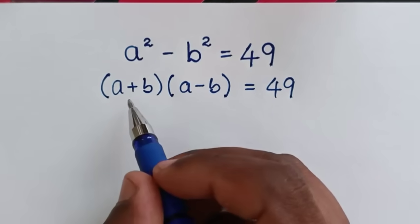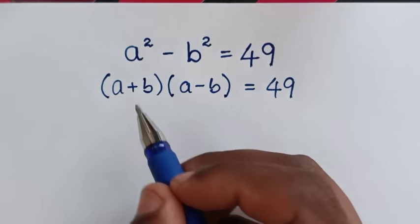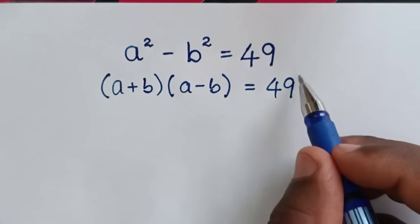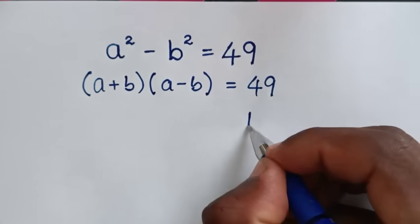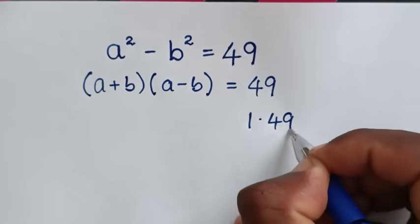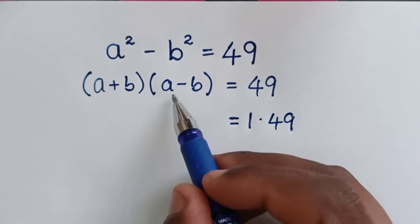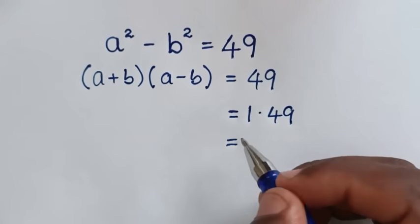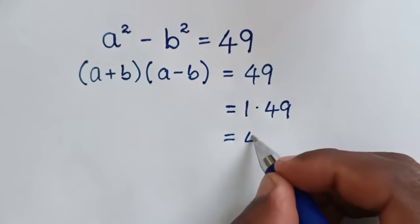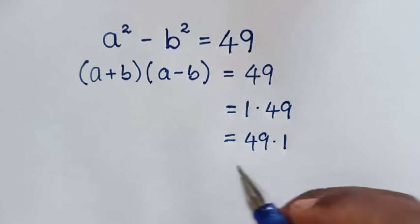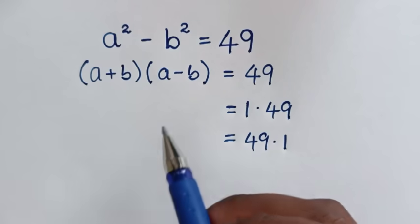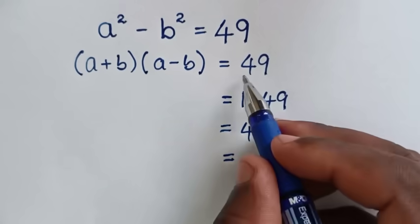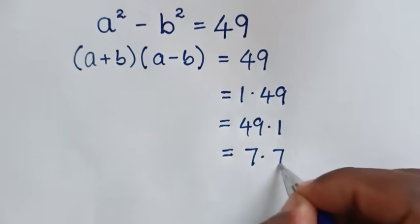Because this is a multiplication of the terms a plus b and a minus b, it equals 49. Now 49 can be written as 1 times 49, or 49 times 1, or 7 times 7.